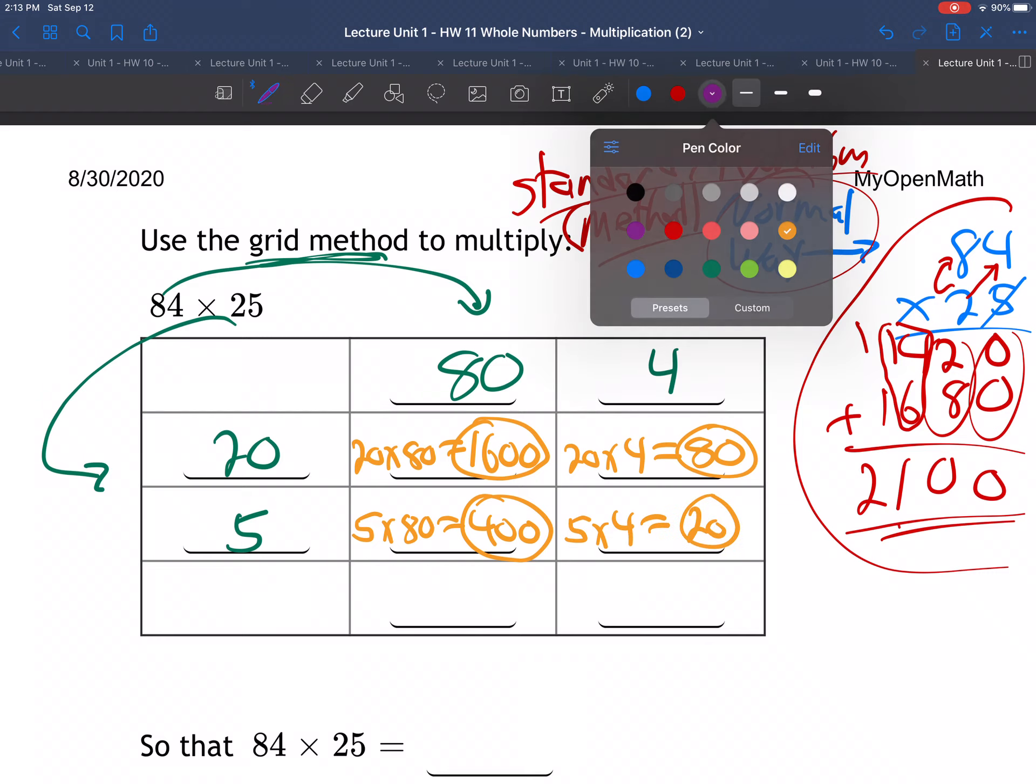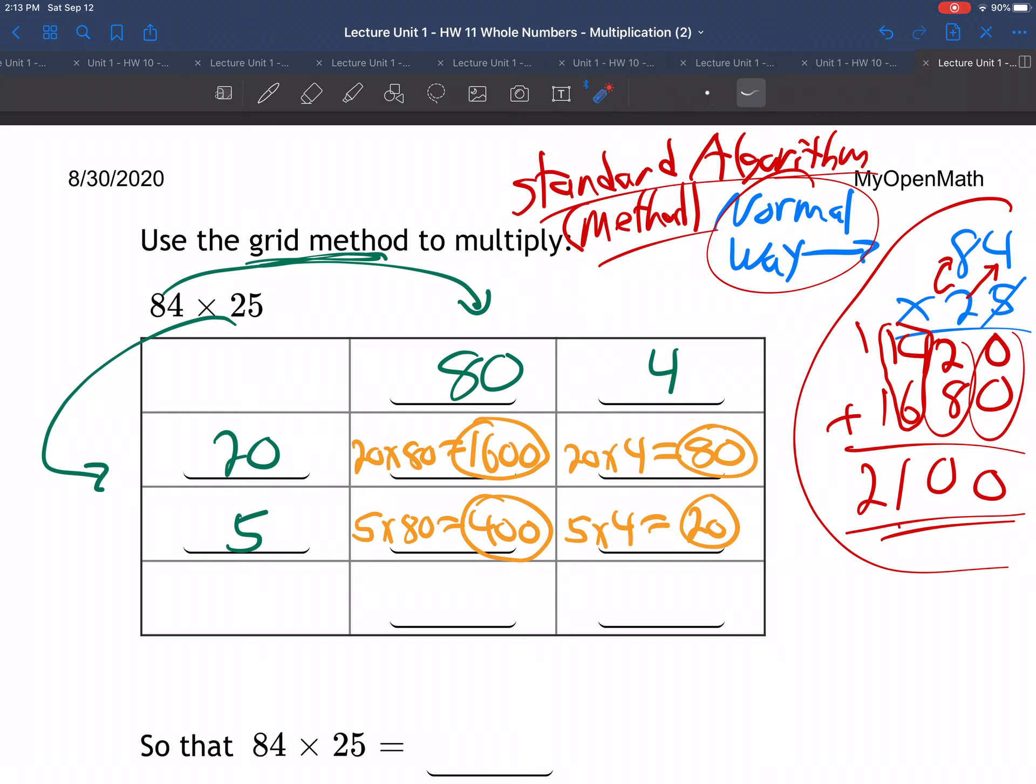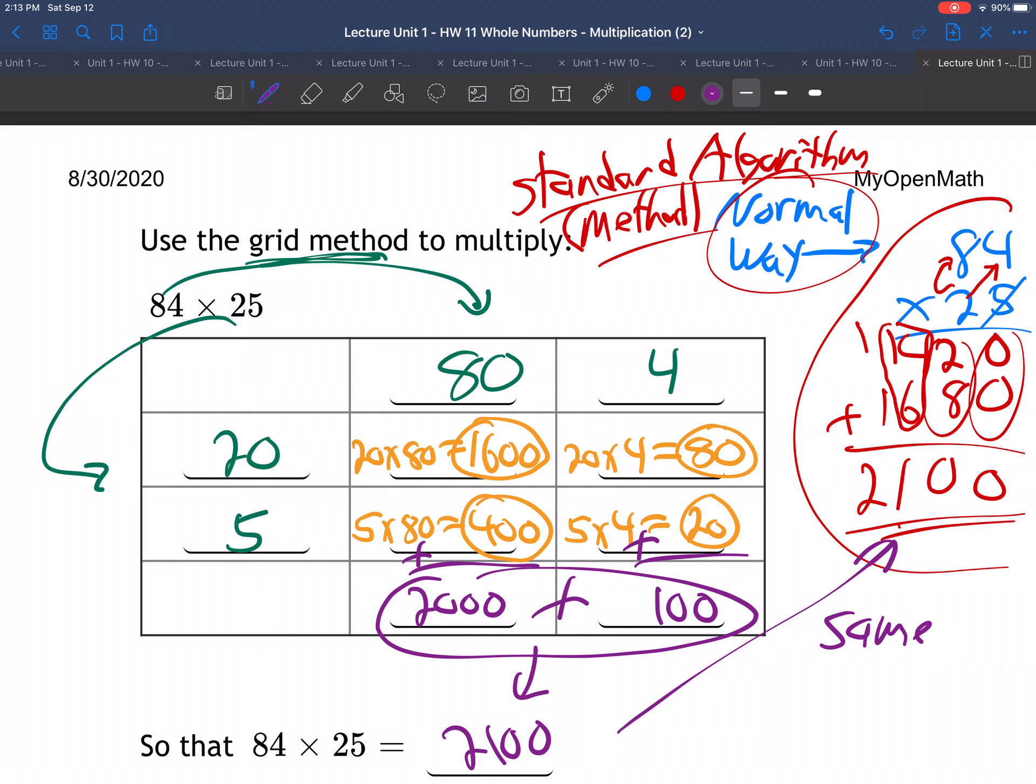Okay, now, how do we finish up this problem? Well, now we add down and down. So, add these up. Add these up. 1600 and 400, well, that's 2,000. Use your calculator, feel free. And then add these up. 80 and 20 is 100. And then final answer, add these up, 2,100. See how that's the same? Same answer in the end.